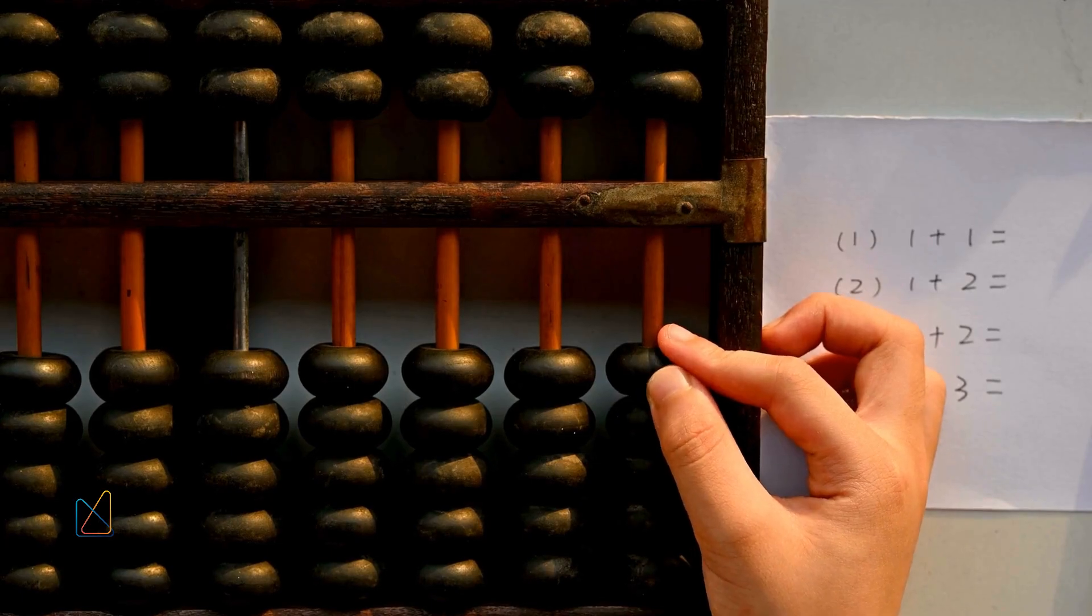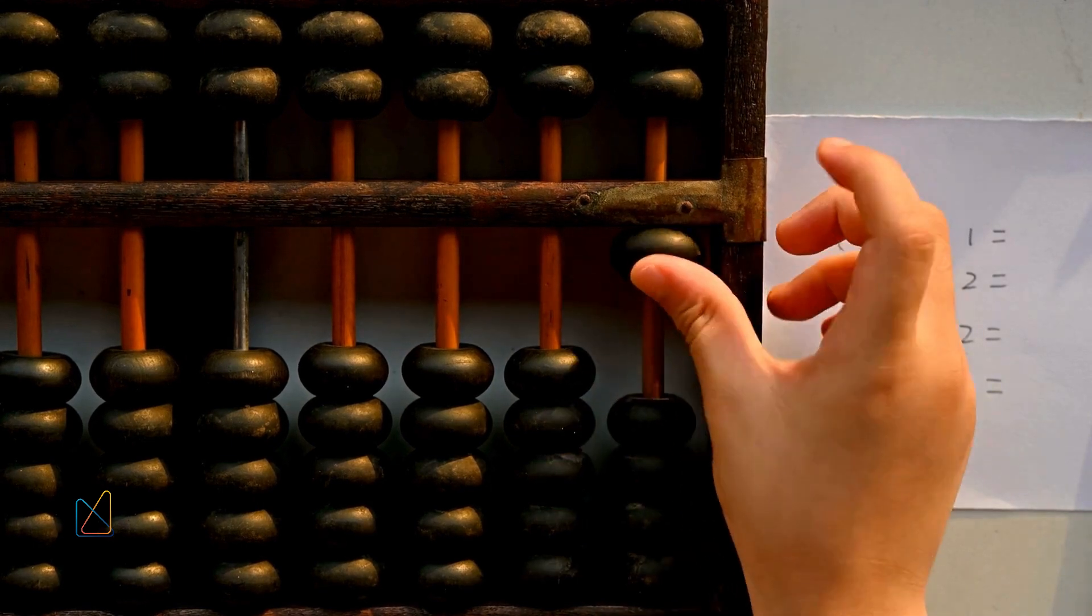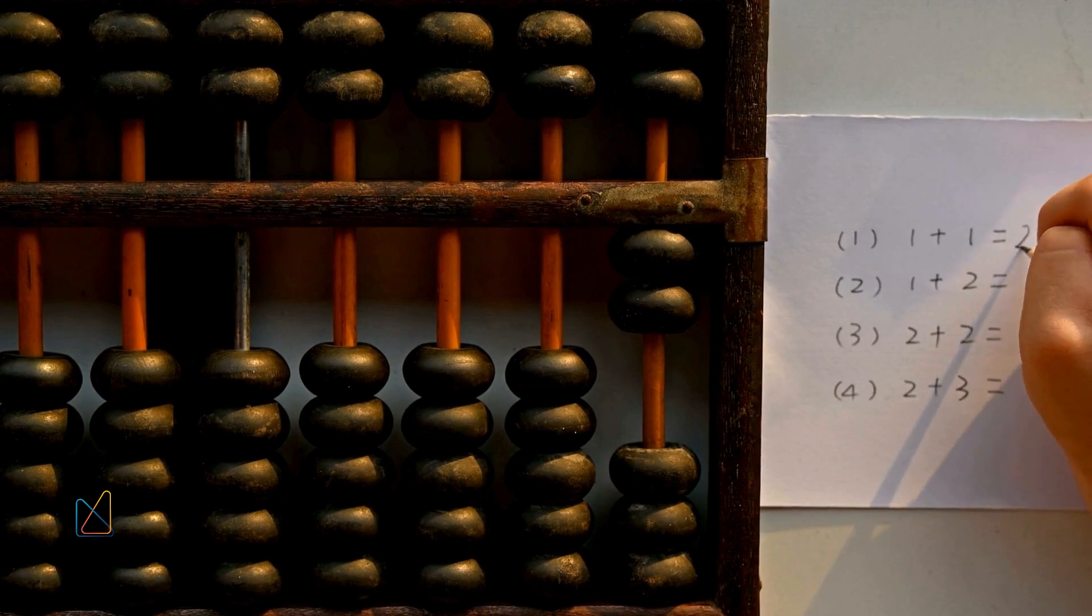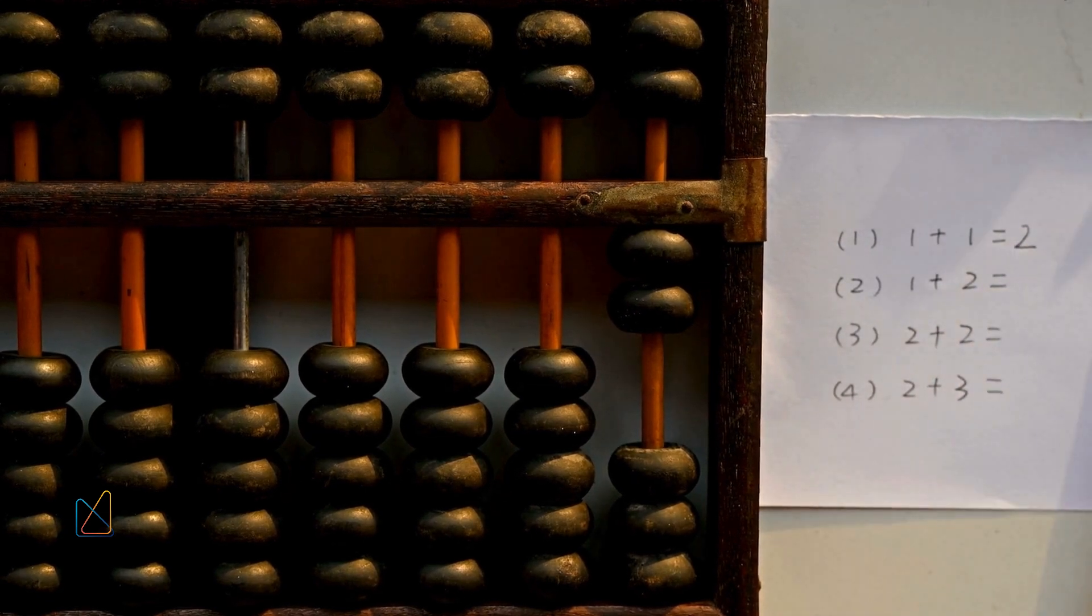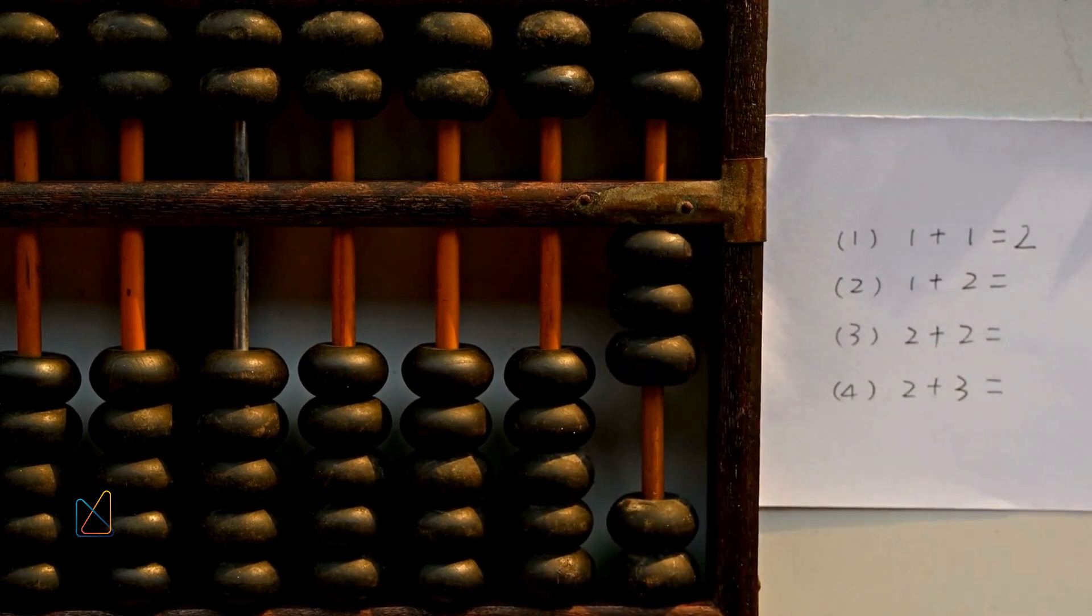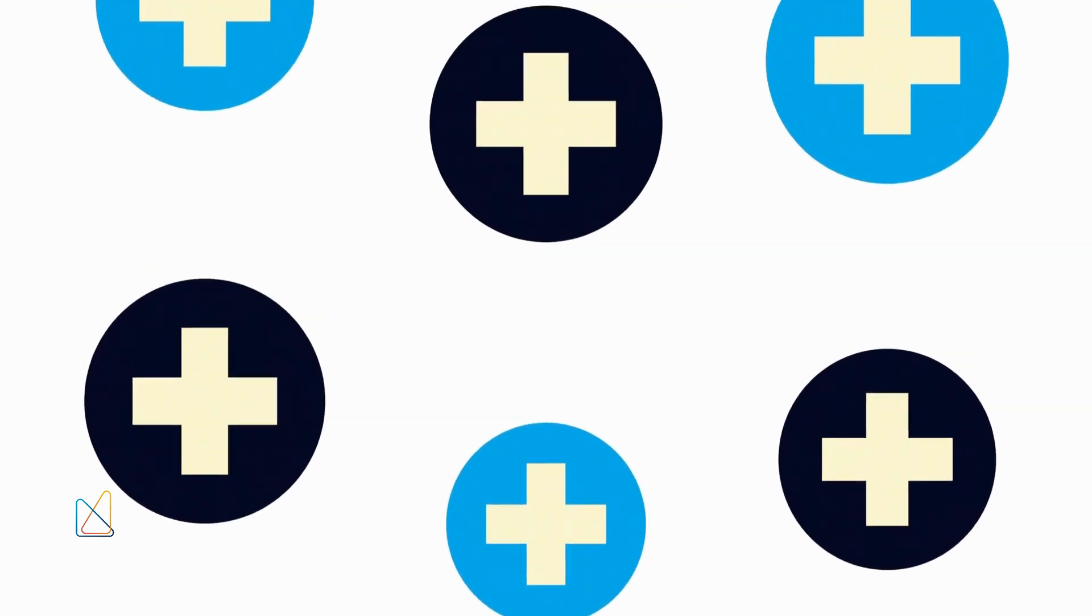This method works because Gauss spotted a pattern and used it to simplify the problem. Instead of adding 100 numbers one by one, he broke the problem down into a smaller, more manageable calculation. And the best part? This technique can be applied to any sequence of consecutive numbers, not just 1 to 100.